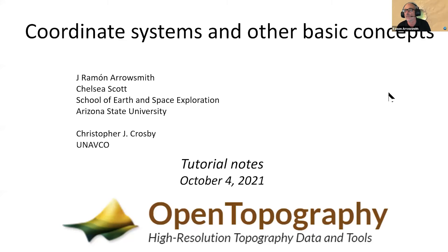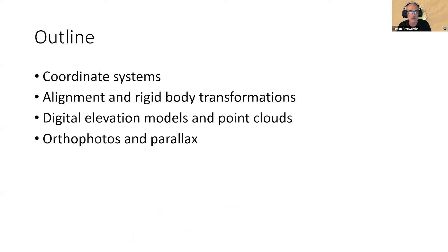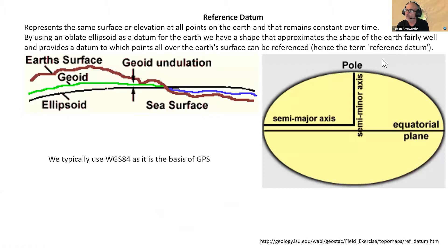There's still some terminology that we weren't always all on the same page about, so coordinate systems and other basic concepts. Coordinate systems alignment, rigid body transformations, digital elevations and models and point clouds, orthophotos and parallax. Maybe most of you know this, but we just want to make sure we have some language that's consistent.